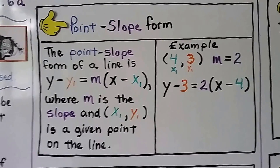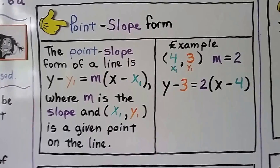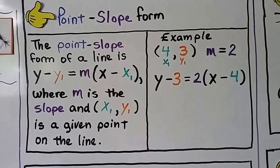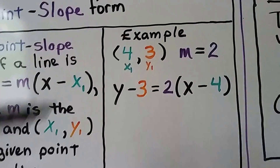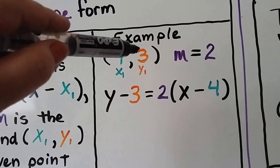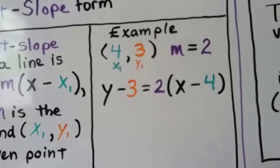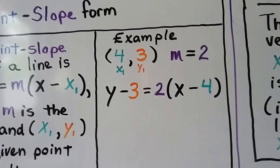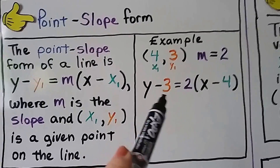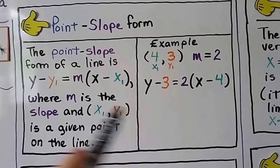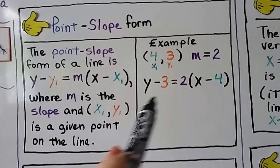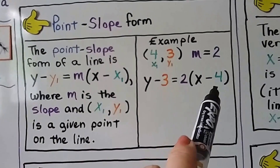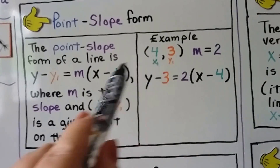Where m is the slope, and x sub 1, y sub 1 is a given point on the line. So if we have 4 for x and 3 for y, that's our x sub 1, y sub 1 for our first point, and we know the slope m is 2. We can write y minus 3 — there's our y sub 1 — 2 for our m, and a 4 for our x sub 1.